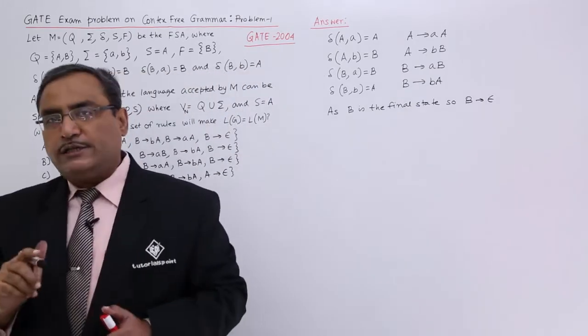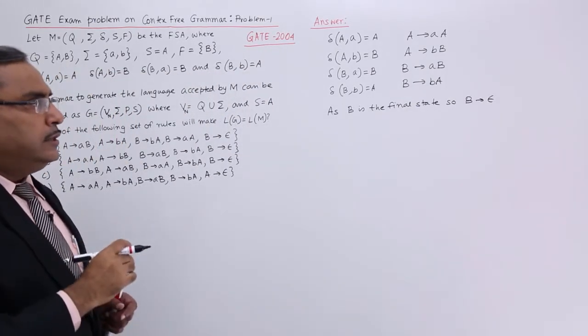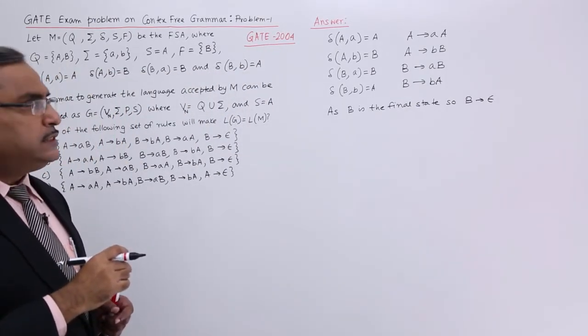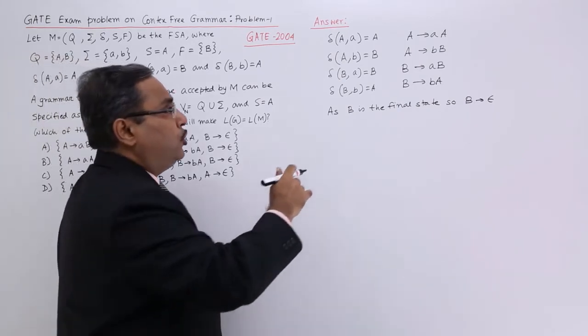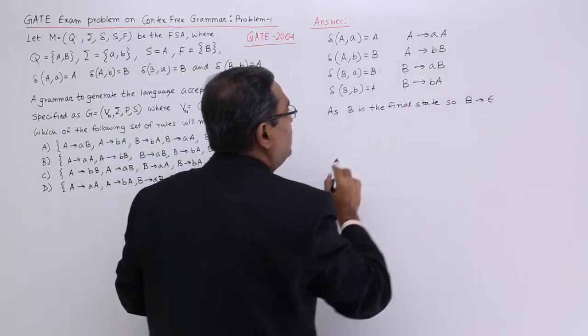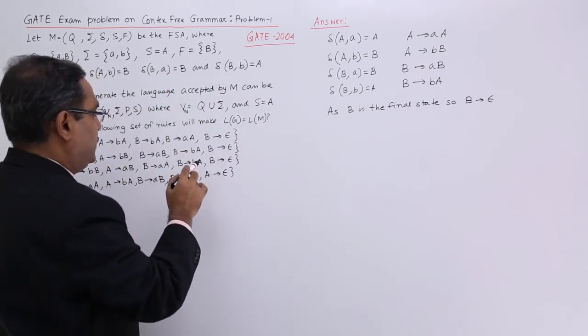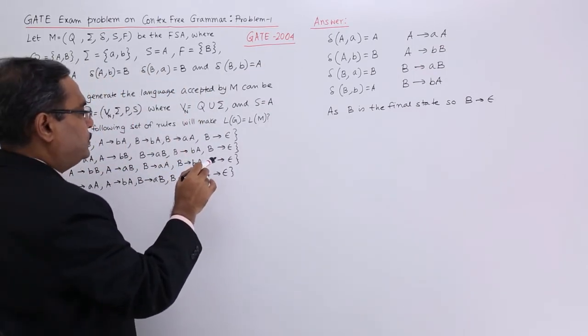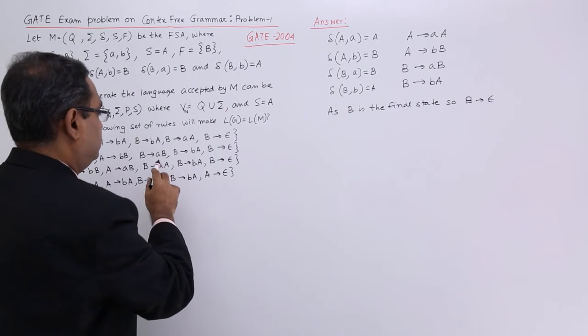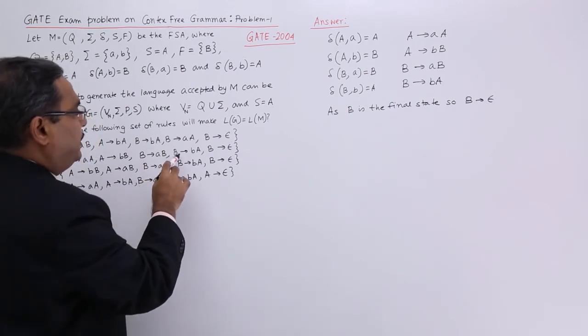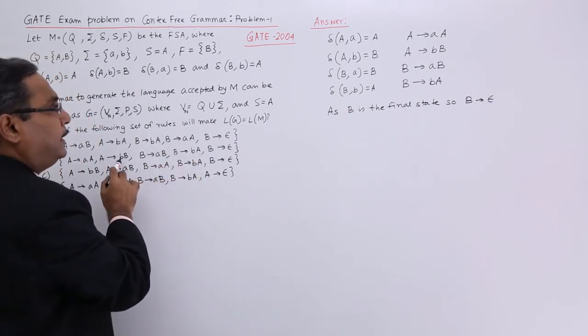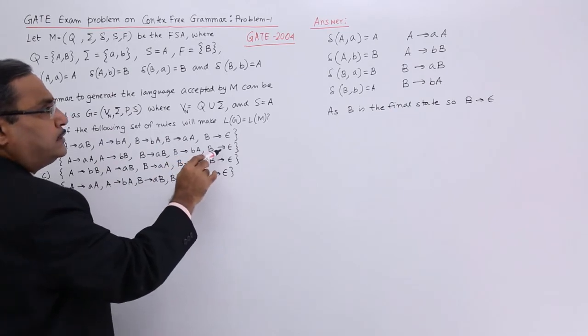In my options, I shall have to search which option is having all these five production rules. A produces A A, A produces B B, B produces A B, B produces B A. I think it is matching with option C.